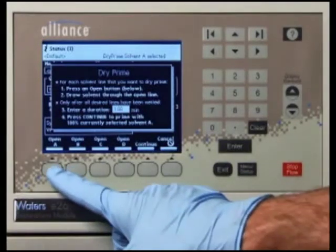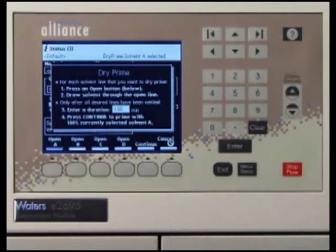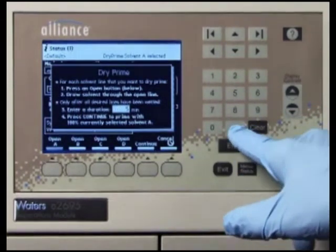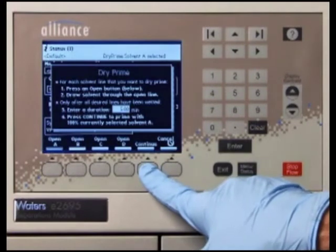Press the screen key corresponding to the solvent line with which you want to prime the system. Waters recommends that you prime using the solvent with the lowest viscosity to help purge air from the lines, especially if the inline vacuum degasser is installed. In the Enter a Duration field, enter the length of time, in minutes, to prime the solvent management system. Start with a value of 5 minutes. Press Continue.